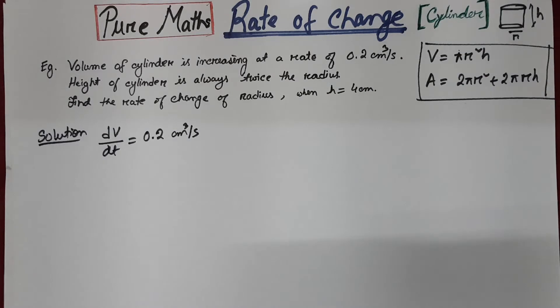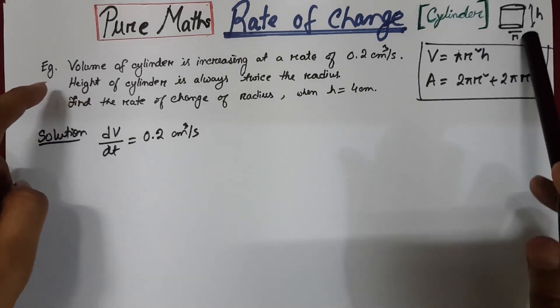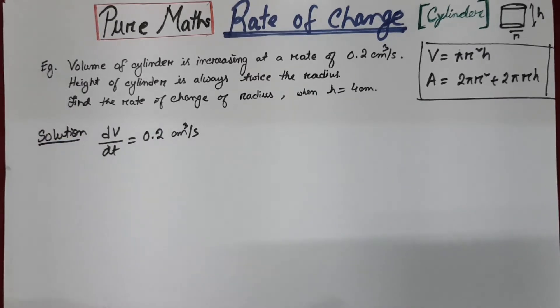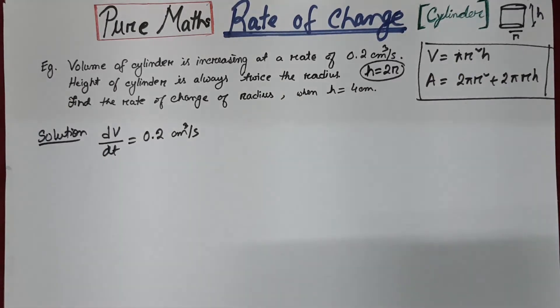And in this one, they have given a relationship between the height and the radius. Height is always twice the radius, that is h equals to 2r. This is given.